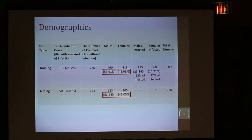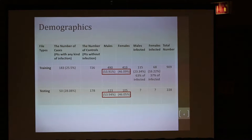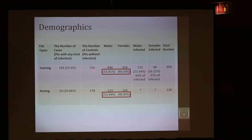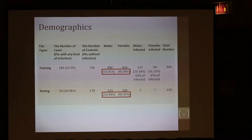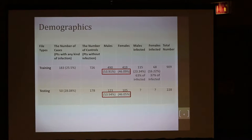So this is the data which was given to us. The training set had about 909 patients. 183 among them, just about 25%, were infected. 726 were not infected. And just about 53% were males and the remaining were females.